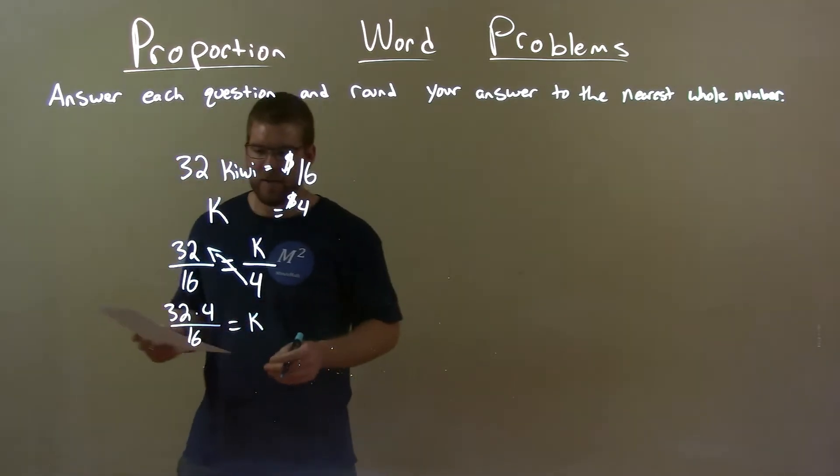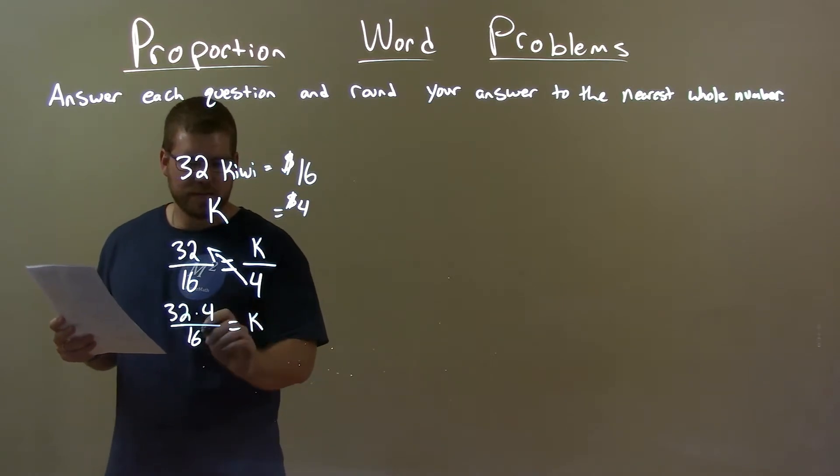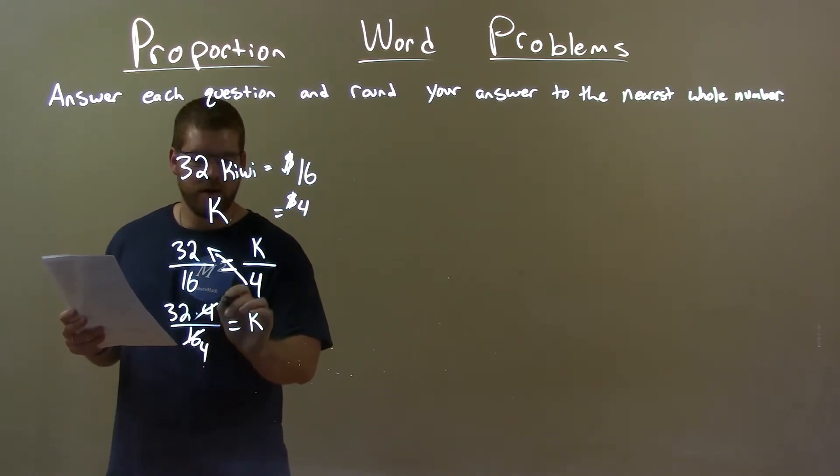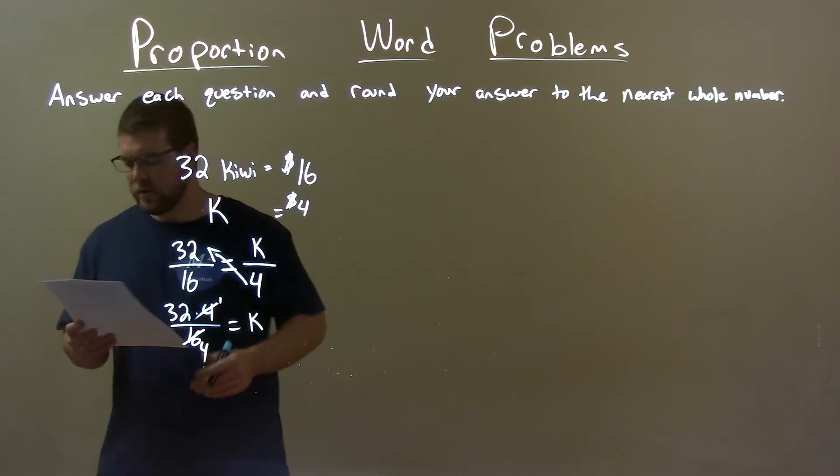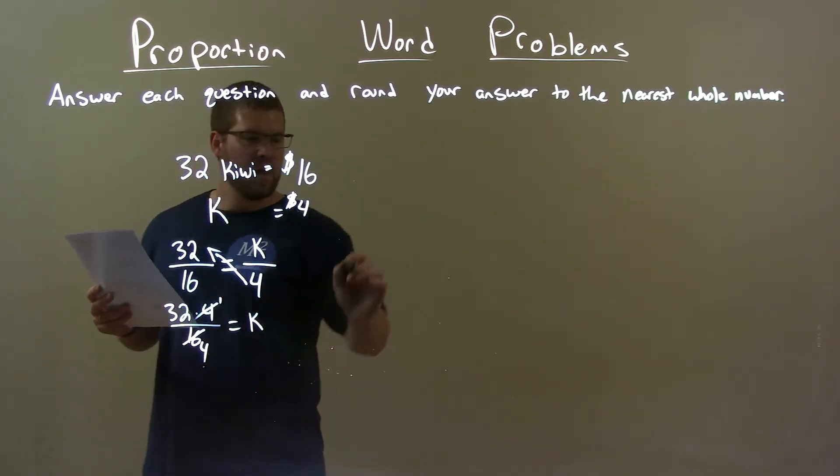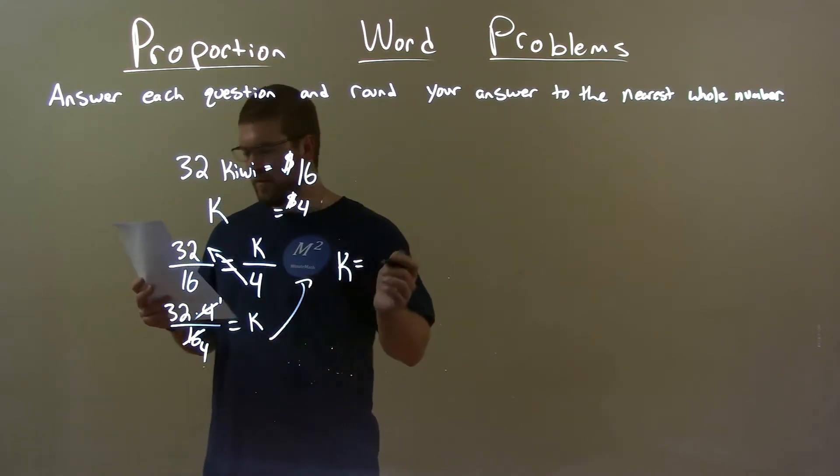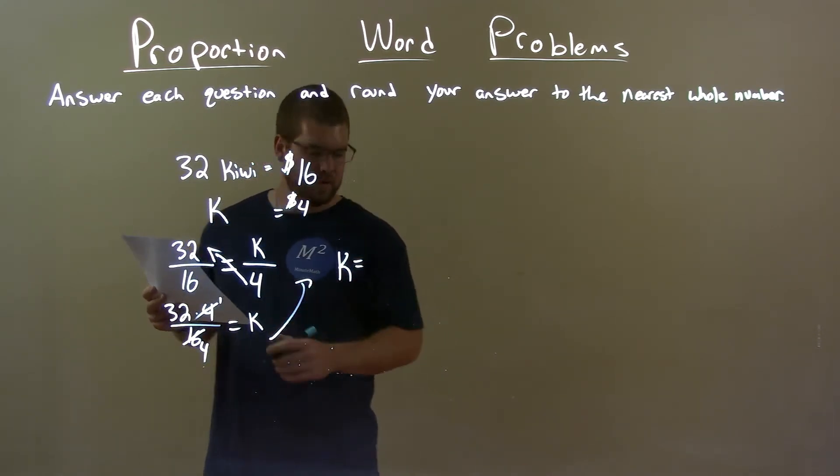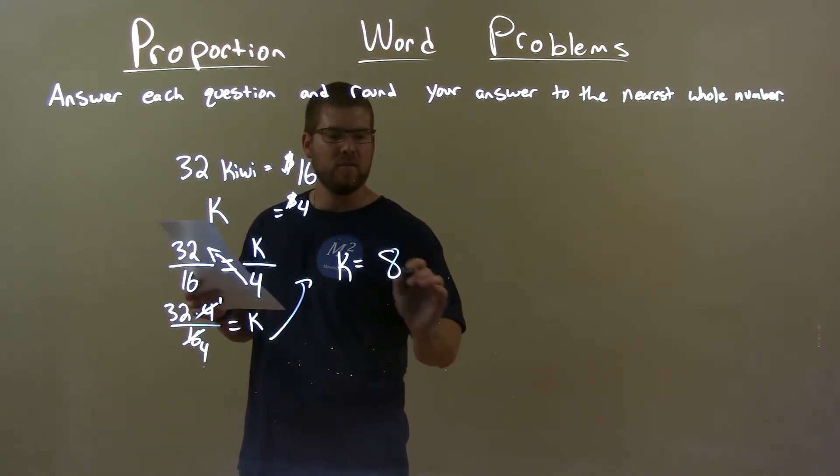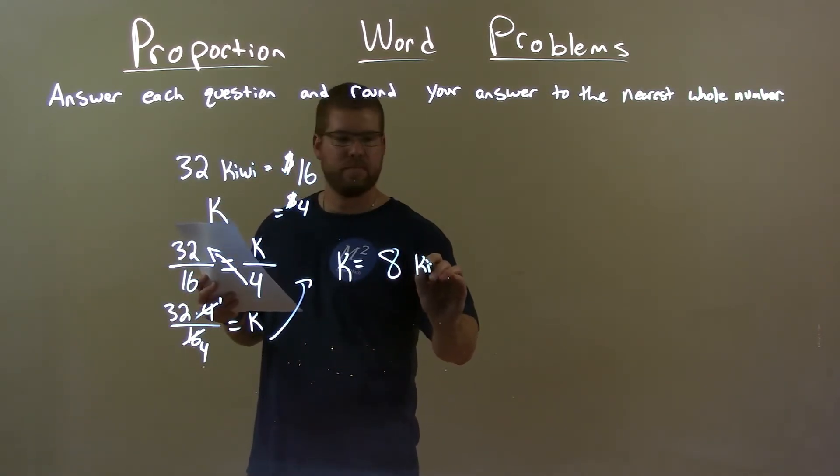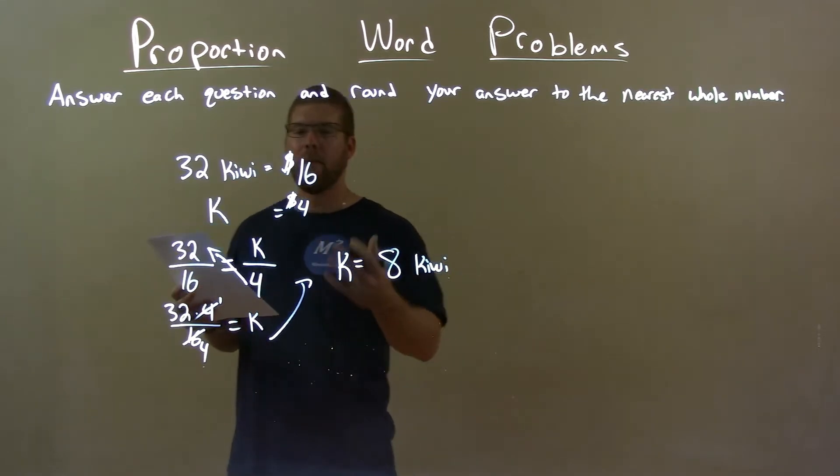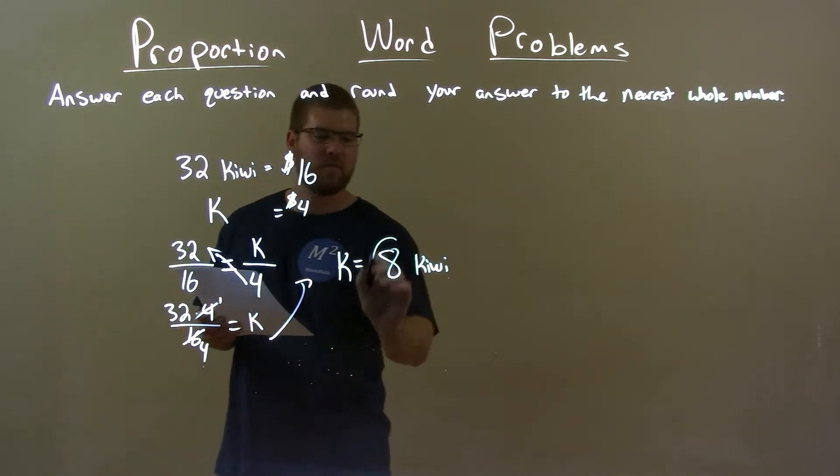Now to simplify this a little bit here, what I like to do is, well, 16 and 4 are both divisible by 4. 16 divided by 4 is 4, and 4 is 1. Now 32 divided by 4, that's easy. So now we have k by itself. I'll put it up here. k by itself, flipped it around, is equal to 32 divided by 4, which is just 8. So 8 kiwis is how many that Lisa can buy with $4.